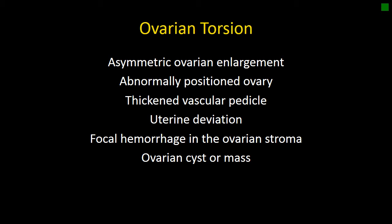In most cases of ovarian torsion, you will see some cyst or mass present in the affected ovary. In many cases, that mass or cyst is a predisposing factor that causes the ovary to move or become abnormally positioned and therefore torse. But in some cases, torsion of the ovary causes enlargement of the follicles and hemorrhage within the follicles.